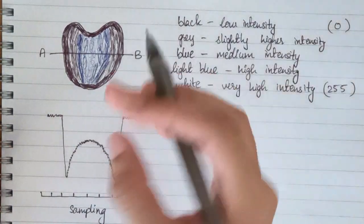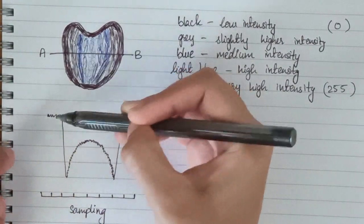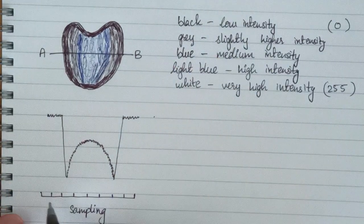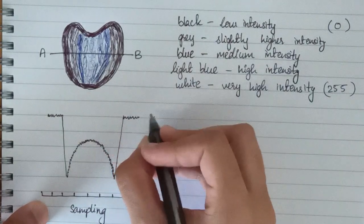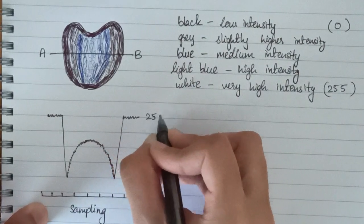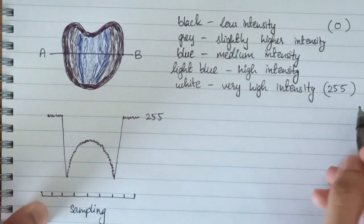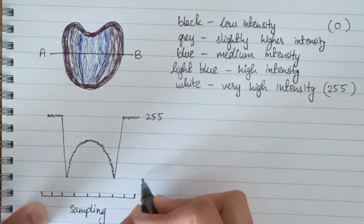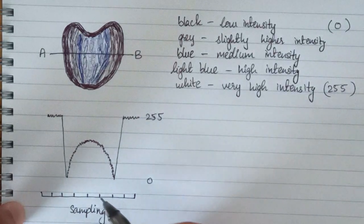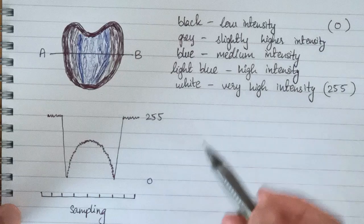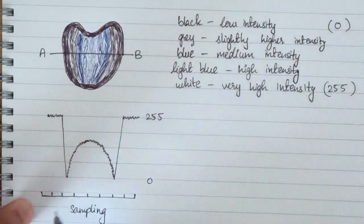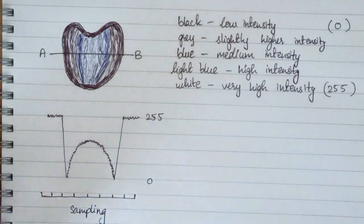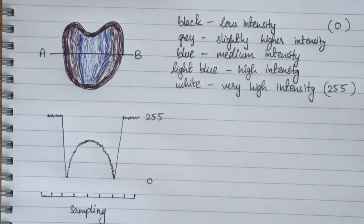Why are we doing this? So that we get the values at the smaller points. If we take this region, we can take the intensity value from here — where 255 represents high intensity and 0 represents low intensity. At each particular region we can get the intensity value. That is why we are sampling the image, which means we are dividing it into smaller equal parts.